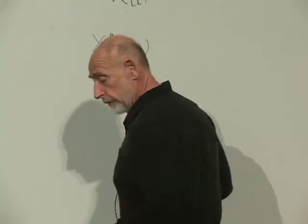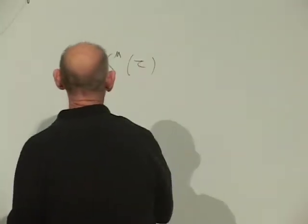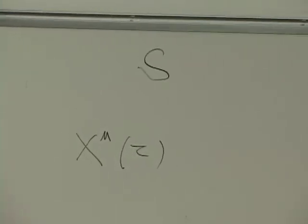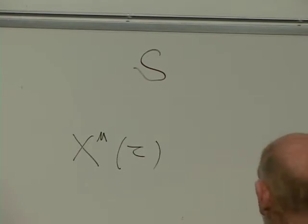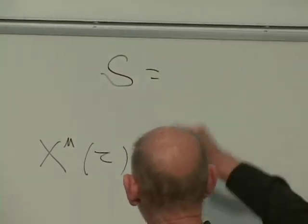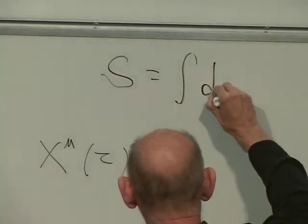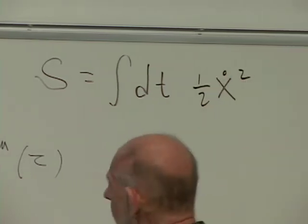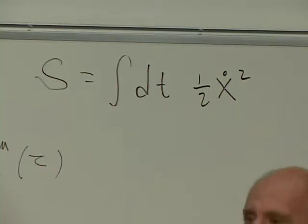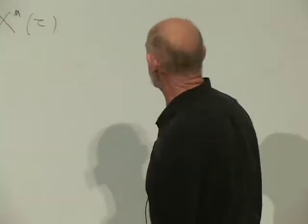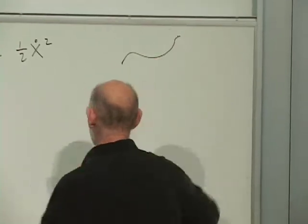In the case of a non-relativistic system, for a free particle, the action — which is usually called S — is the integral over time along the trajectory of the kinetic energy: one-half x-dot squared (I've chosen the mass to be one). You minimize it to find the trajectory of the particle; you minimize it subject to some end positions, holding down the endpoints.